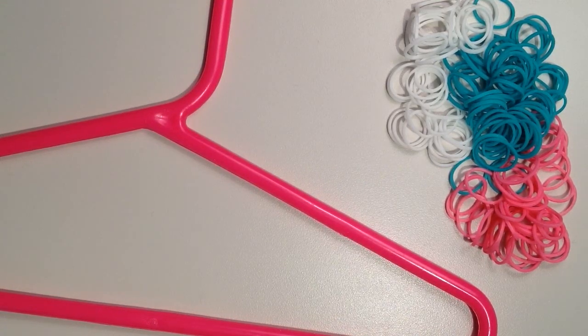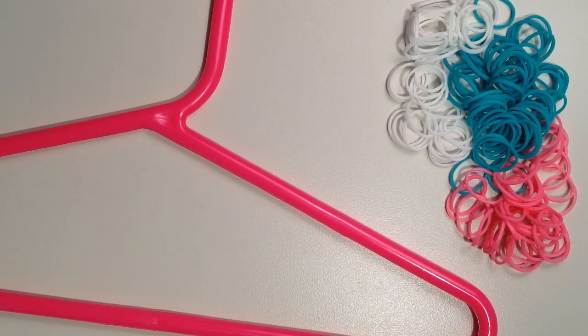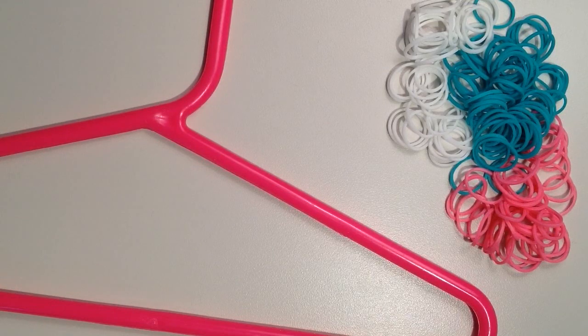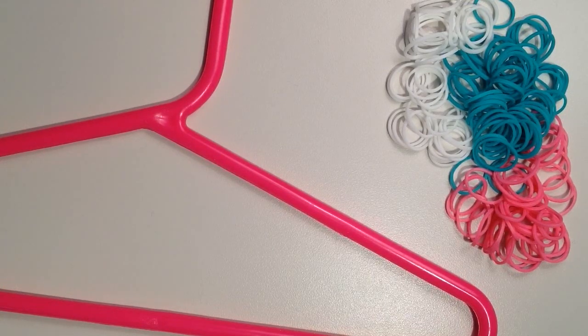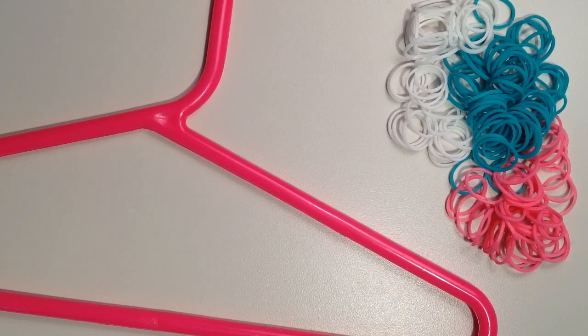You're going to need about 320 rubber bands. And if you want to add the Flower Fun Charm that's an additional 28 bands. Now if you're going to do the adult size hanger you're probably going to need about 420 rubber bands depending on the size of your hanger.